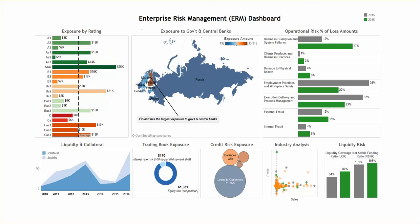Exposure to Government and Central Banks is a map view that utilizes the power of color to help show where we have the highest level of exposure by country. We can clearly spot that Finland has the highest exposure to government and central banks because it's a dark orange-brown color, compared to the lower levels of exposure shown in darker blue and lighter blue colors.